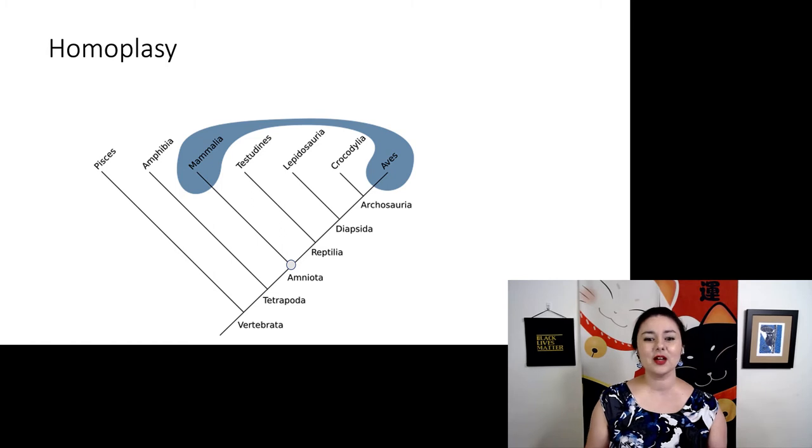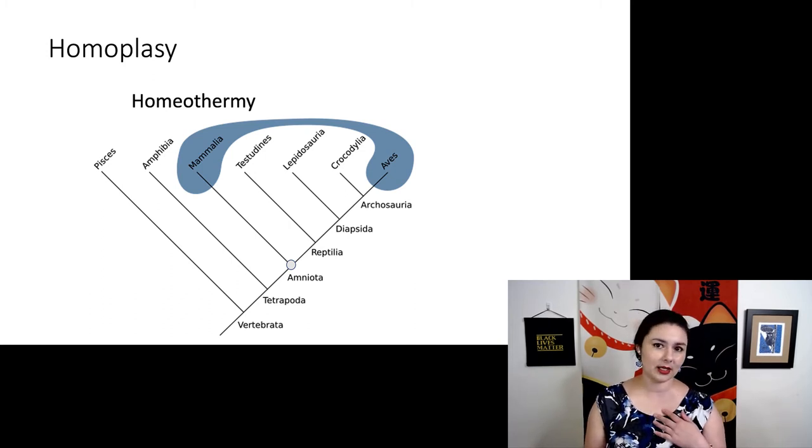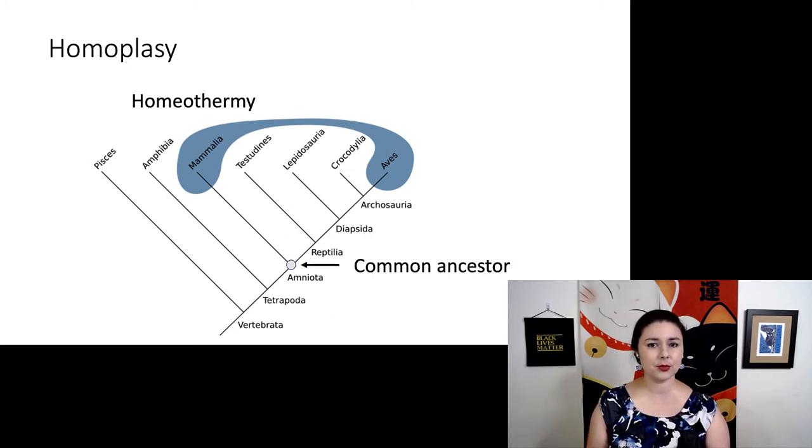Let's look at an example. So here, mammals and birds are united in the fact that we are homeotherms, or we generate our own body heat. You might more commonly hear this called warm-blooded. But you'll notice our common ancestor is actually pretty far, and a bunch of these groups in the middle, they do not share this trait. So probably what happened is we evolved it independently. Homoplasia is responsible for the fact that we are both homeotherms and not homology.